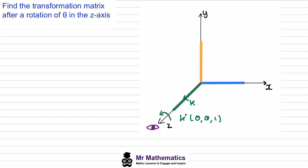When we rotate i anti-clockwise about the origin by theta degrees, it's rotated to about here. The x value will be the adjacent length of this triangle, so cos theta. The y value will be the opposite length, so sine theta, and the z value is zero.